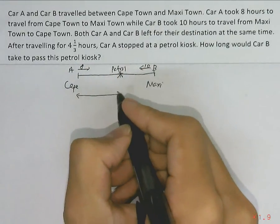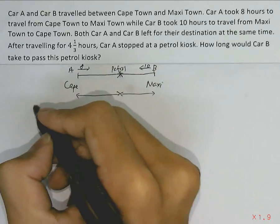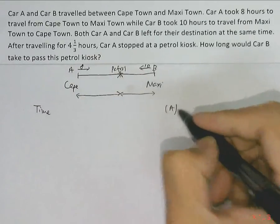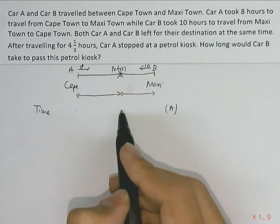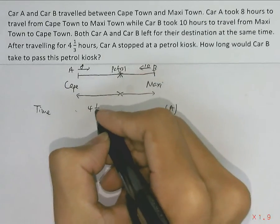So we'll split the distance up into 2 portions. Now, the time that car A takes to travel from here to here, from Cape Town up to the petrol kiosk, is 4 and 1/3 hours.